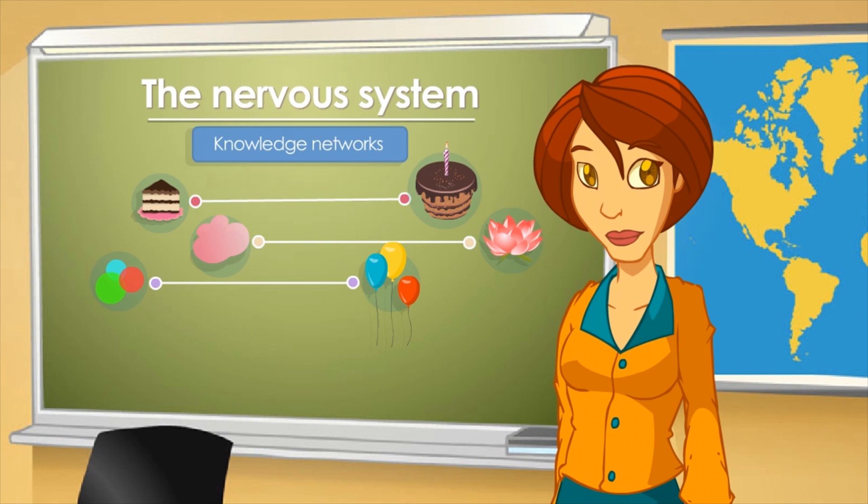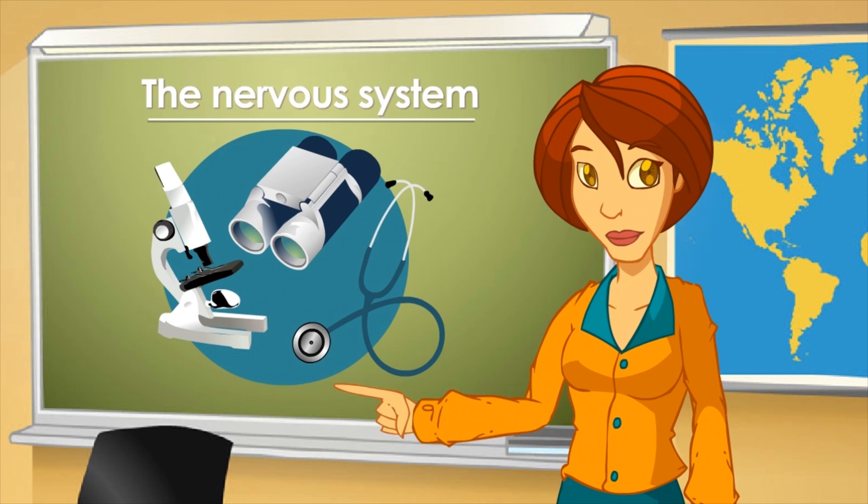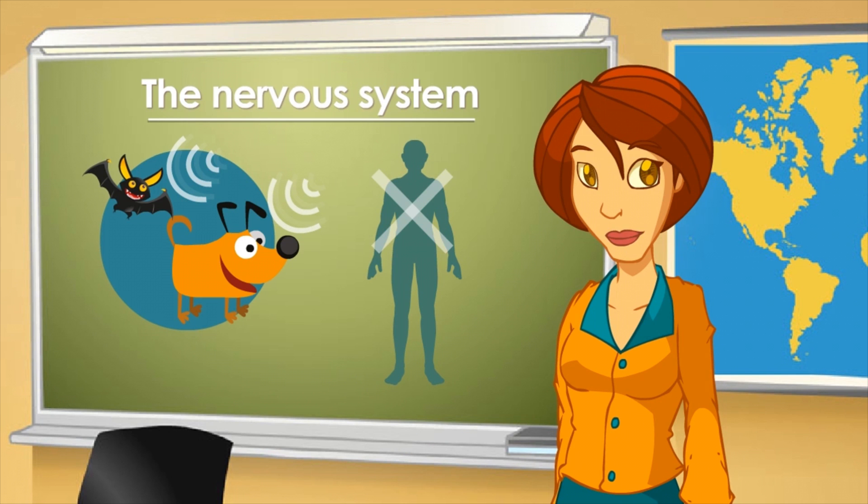To receive signals that we usually don't feel, we generally build some special machines capable of receiving those signals. Some animals can also receive signals that human beings cannot perceive.